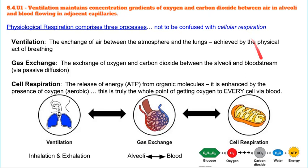Cell respiration releases energy in the form of ATP so that energy can be used inside the cell. Cell respiration occurs in the mitochondria and the cytoplasm of cells. Oxygen is used in that process, and carbon dioxide is the byproduct. That carbon dioxide gets released by our cells back into the bloodstream, into the capillaries and tissues, and then all the way back up into the lungs and through the heart to be exchanged once again.